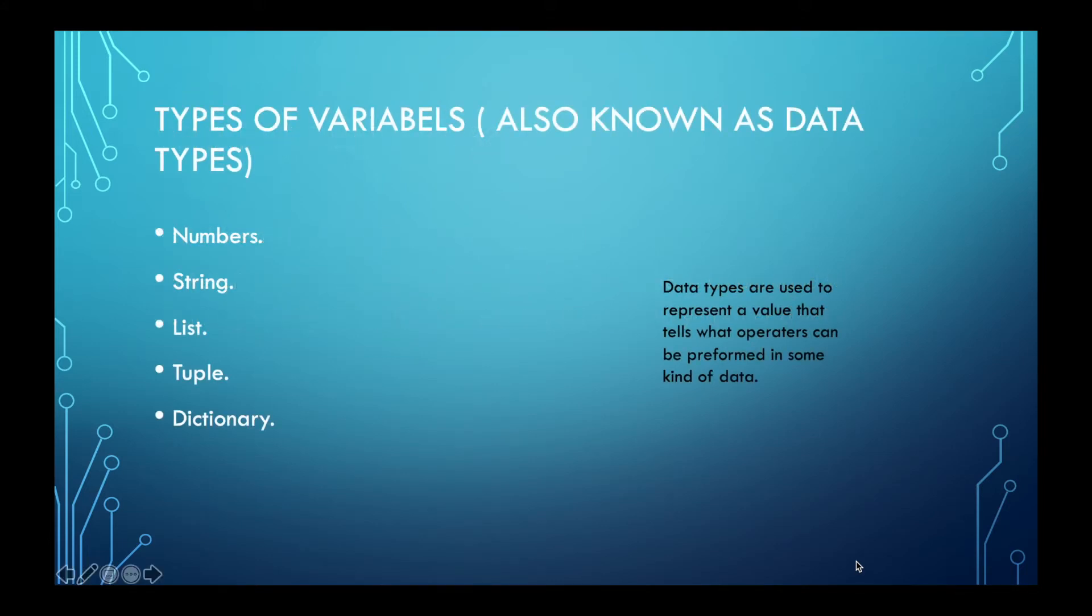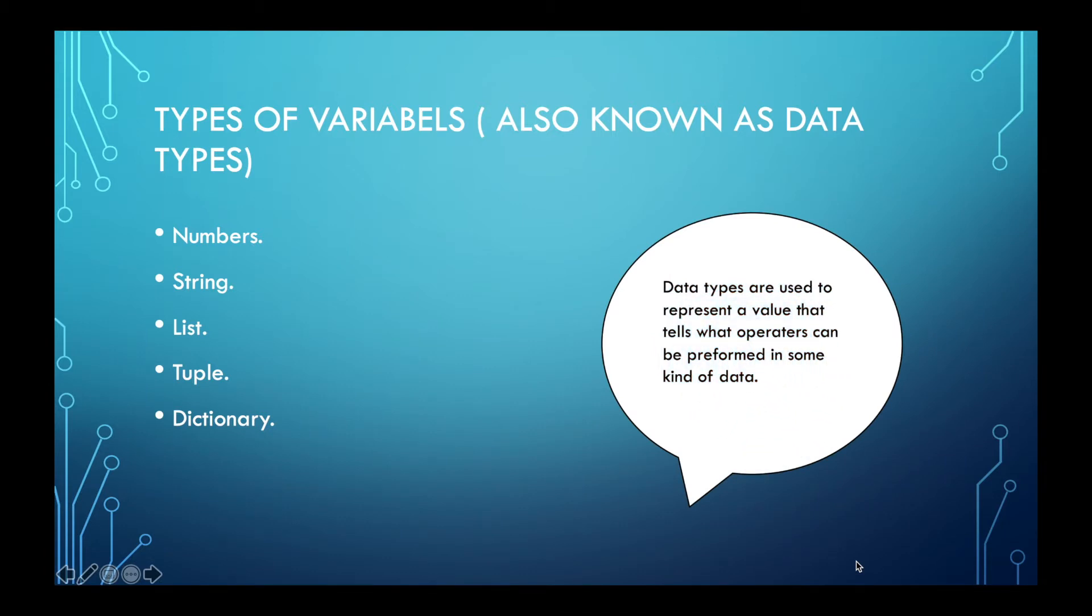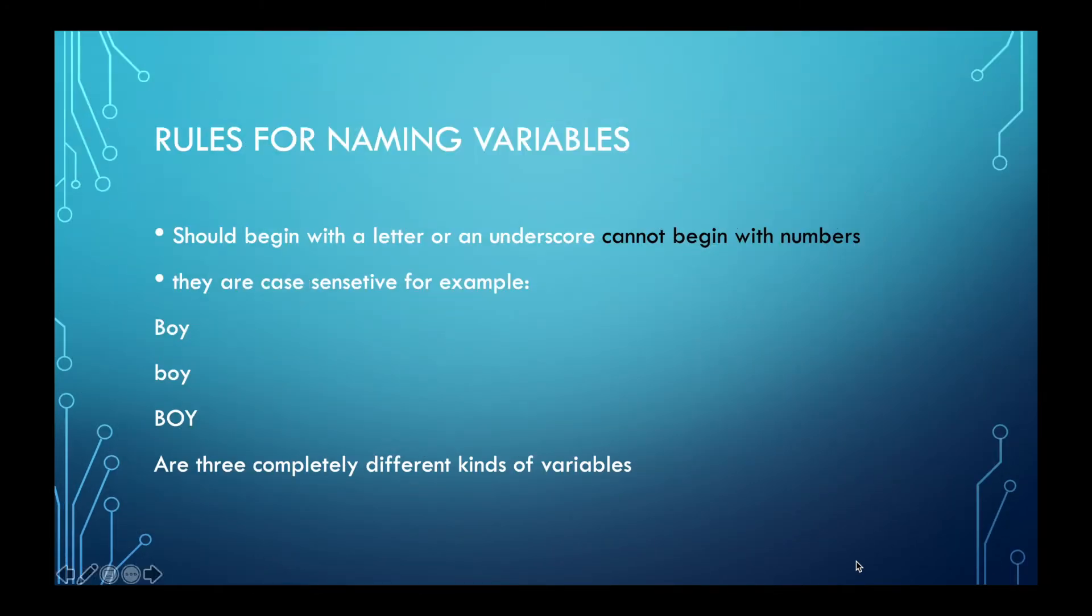So now let's talk about types of variables. Variables might also be known as data types. First of all data types are used to present a value that tells what operator can be performed in some kind of data. And the types are numbers, strings, lists, tuples, and dictionary. So let's start. We're going to explain each one.